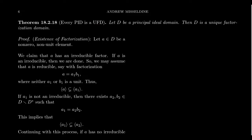Unique factorization breaks up into two parts. First, you have to have factorization — every non-zero, non-unit element has a factorization into irreducibles. That's the existence statement. But then the unique part says that two different factorizations of the same element are really equivalent to each other — up to order of factors and associates of irreducibles. So we'll first prove that a non-zero, non-unit element A in our PID has a factorization consisting of irreducible elements.